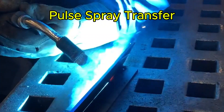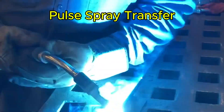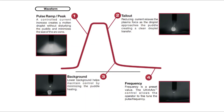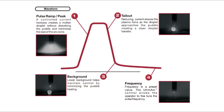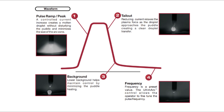Finally, let's explore pulsed spray transfer, a more advanced GMAW mode. Here, the power source actively changes the amperage back and forth. It provides a pulsing peak current, briefly raising the amperage above the transition point for axial spray transfer. This peak current lasts for a very short time — milliseconds — before a lower background current takes over. This background current is just enough to keep the arc lit but prevents metal transfer, meaning metal only transfers during those peak pulses, ideally one droplet per pulse.